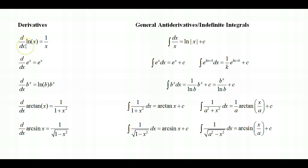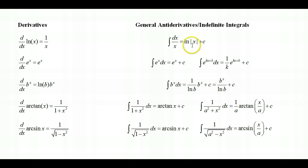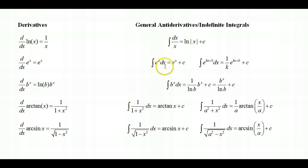We're going to remind ourselves that the derivative of the natural log function is 1 over x. So its antiderivative is the natural log of the absolute value of x plus c. We already know the derivative of e to the x is e to the x, so the general antiderivative of e to the x is e to the x plus c.